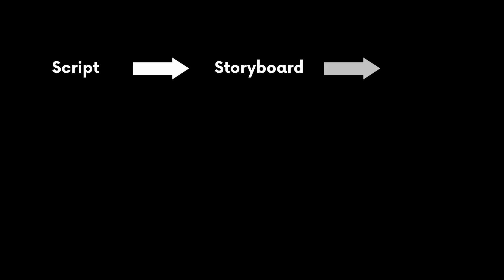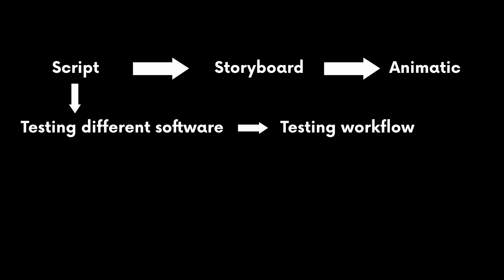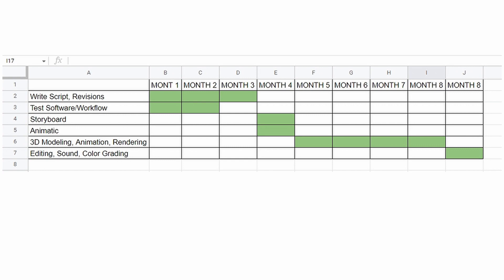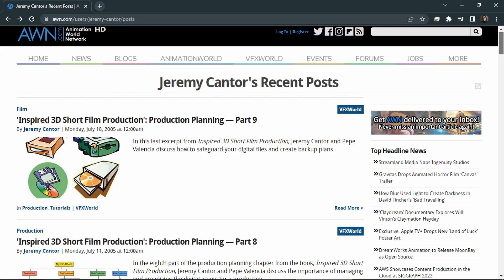For example, you can't make the animatic before writing the script, but you can test different software while writing the script if you are still unsure which one to use, which is actually what I did. You can break the list down first in months and then in what you are going to do each day.